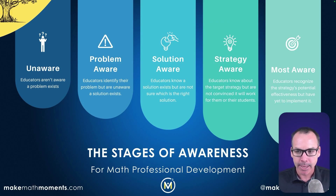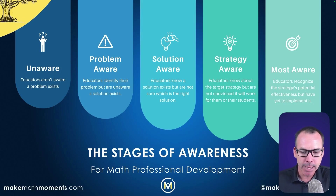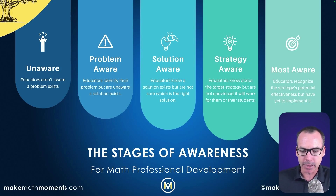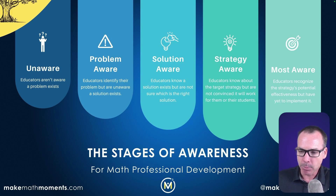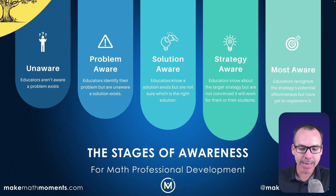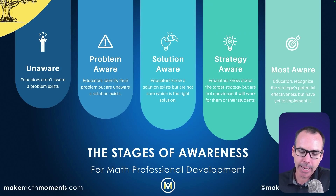And this is where we've made mistakes — we jump right to solution aware. We say here's the solution to your problem, this is what it looks like, but we haven't made them problem aware and they came from the unaware stage. When we are in the solution aware stage, this is where it makes sense. If you can get a teacher here — identifying a problem and now actively looking for solutions — this is where your strategies, ideas, and routines, and the modeling of them, will make sense. This is where you see teachers nodding their heads.